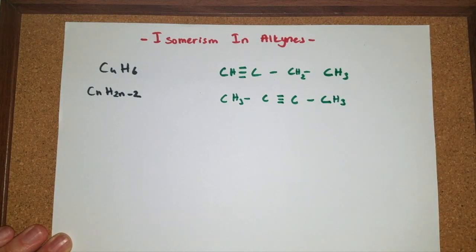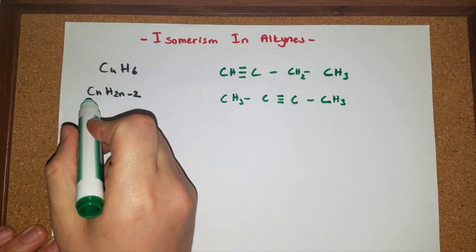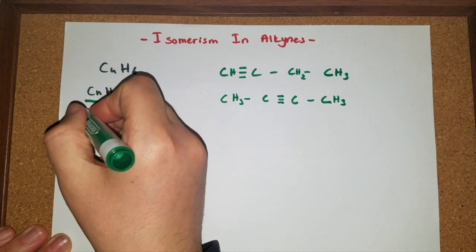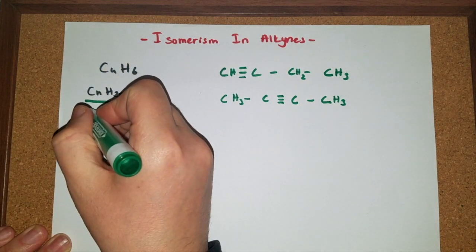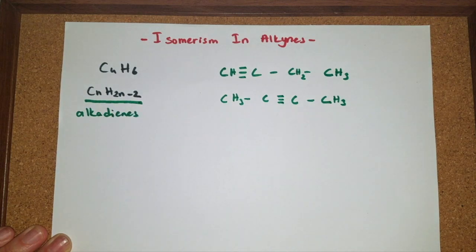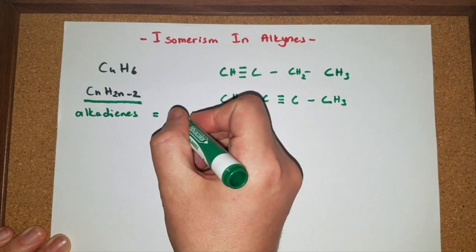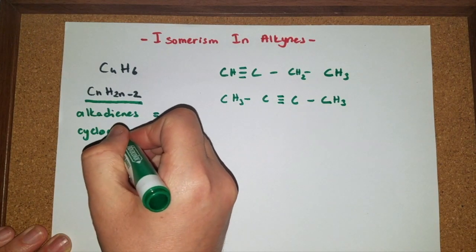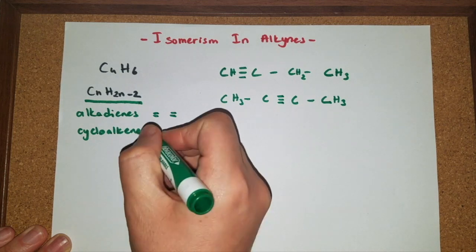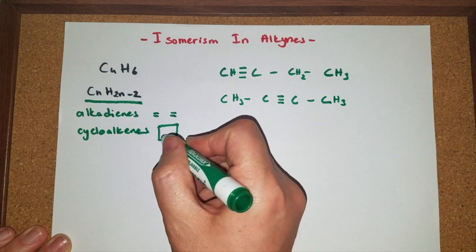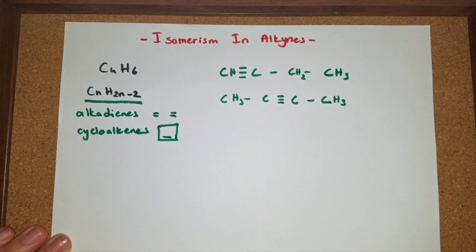At this point, you should remember that different families can have the same general formula. We have alkadiens, which have two double bonds in their structure. We also have cycloalkenes, which are cyclic compounds having a double bond in their structure.